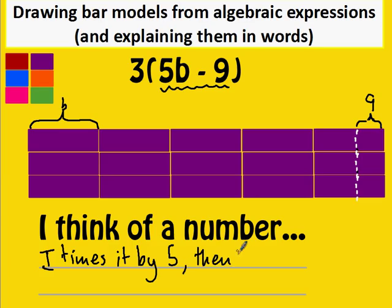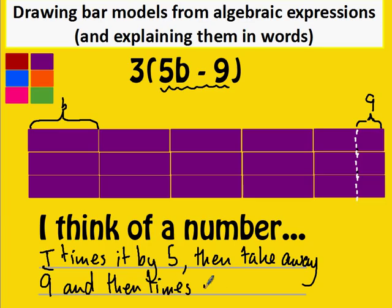Then take away nine. And then times it all by three. By saying and then times it all by three, it gives us the sense that we're timesing everything that we've just done, the five b take away nine by three. It makes it clear that we're not just taking away nine times three.